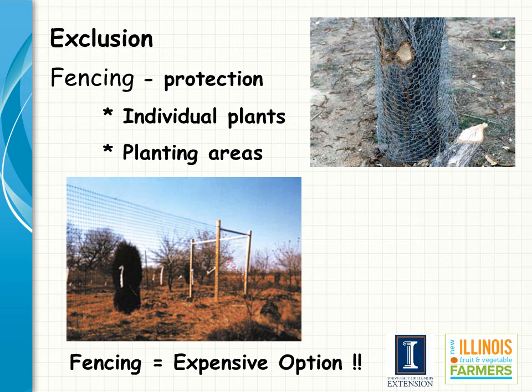Exclusion can be a very effective tool to reduce wildlife damage to crops, but it is an expensive option and therefore has to be considered a long-term investment. In most cases, fencing is used to keep wildlife out of a crop area, but sometimes it is used to individually protect trees. The upper right picture shows chicken wire used to protect trees from beaver damage, and the lower picture shows mesh netting used as a barrier for white-tailed deer.